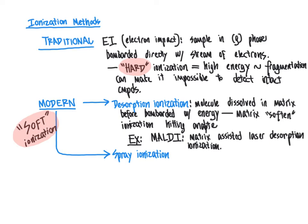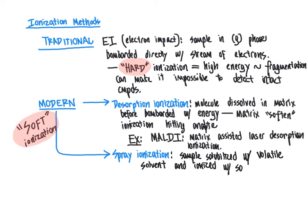One common spray ionization approach is electrospray ionization — ESI. In the spray ionization mode, the common feature is that the sample is solubilized with a volatile solvent. That volatile solvent will absorb some of the energy bombarding the sample to soften the impact of ionization. Quite possibly the most common modern application of spray ionization is electrospray ionization, or ESI for short.